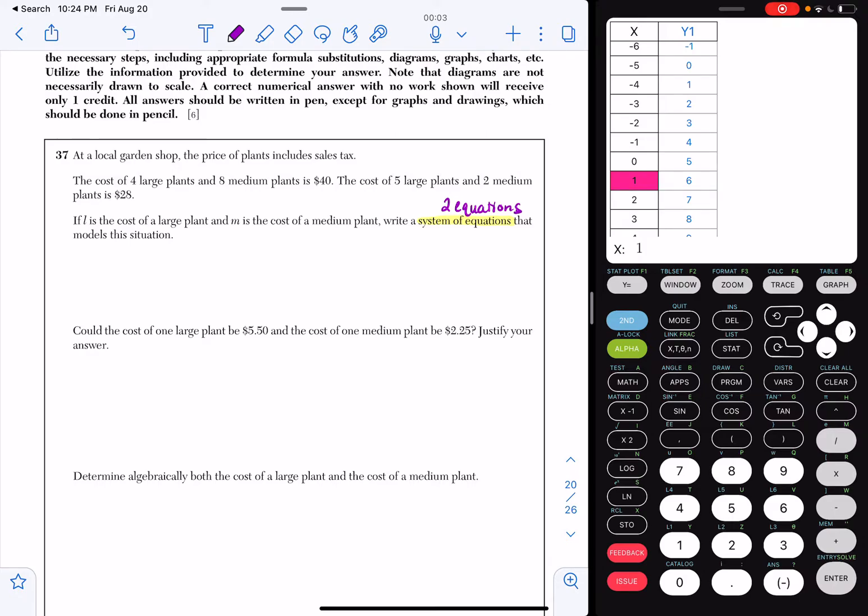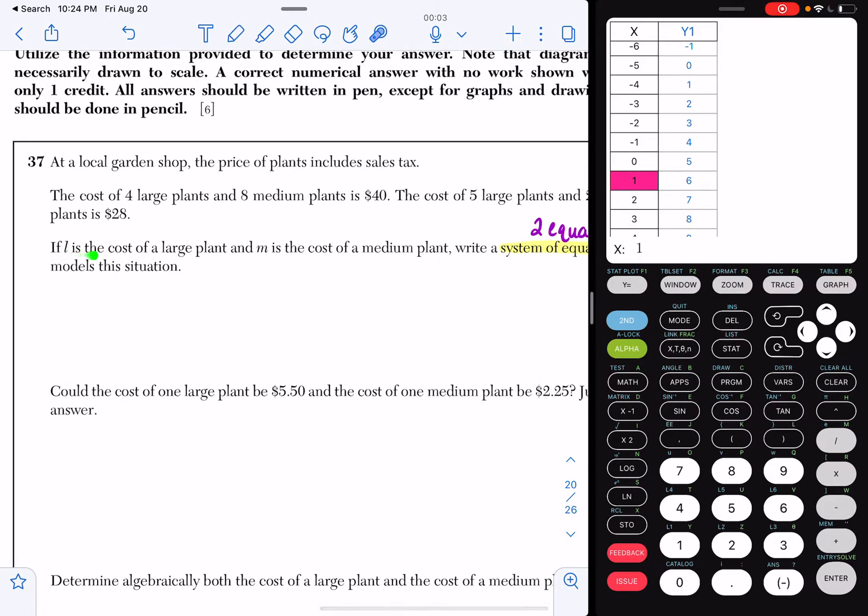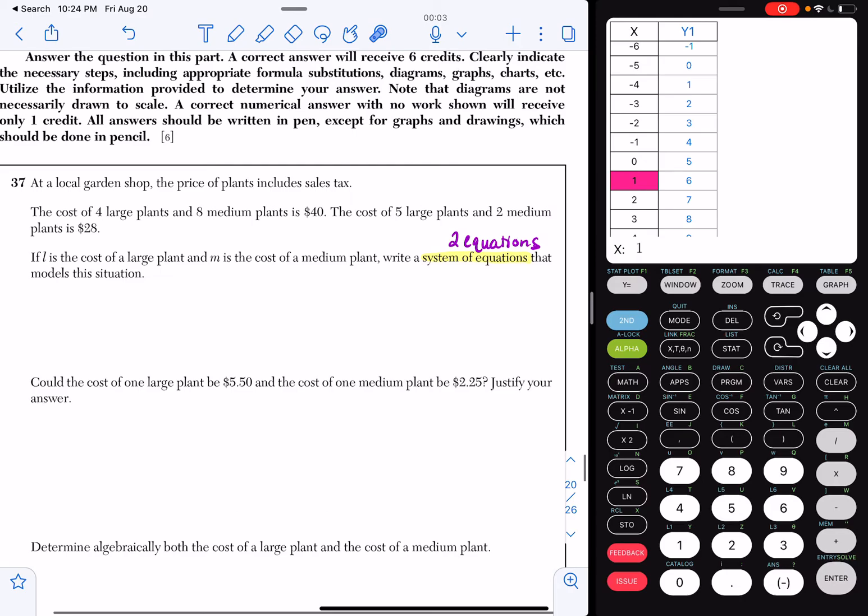So you're probably wondering, how do I write this equation? Well, it's actually pretty straightforward. They give you all the information here. So let's read it again. If L is the cost of a large plant and M is the cost of a medium plant, they want you to write a system. So we have all this information about large and medium plants up here. If you look, the cost of four large plants and eight medium plants is $40. So if I wanted to, I could represent this as 4L, 8M, add them together and set it equal to 40. So that's one of my equations. I can do 4L plus 8M is equal to 40.